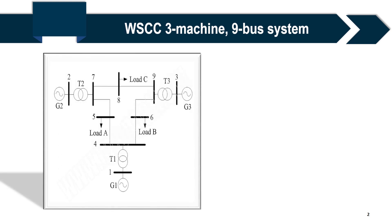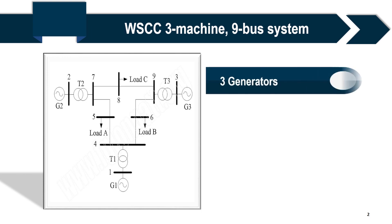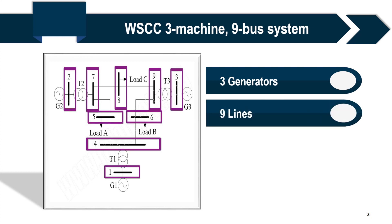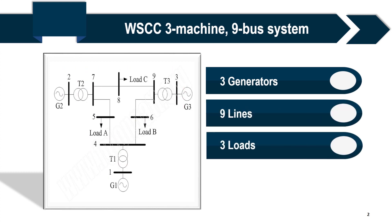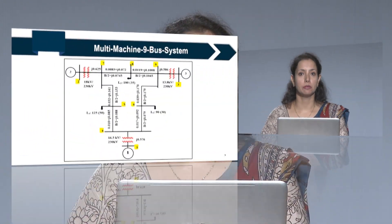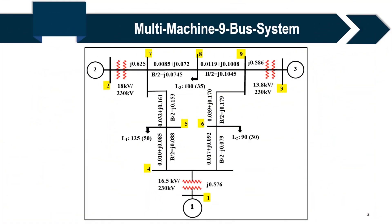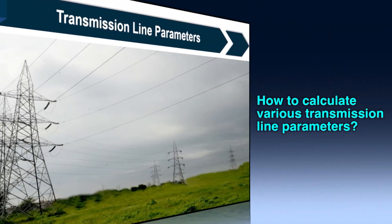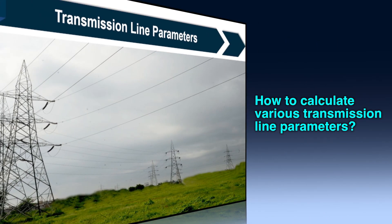This is the 3-Machine 9-Bus System which we are going to study. As you can see, it has 3 generators: generator 1, generator 2, and generator 3. There are a total of 9 transmission lines, 3 loads — load A, load B, and load C — and 3 power transformers. Before working on this system, we must know how to calculate the various transmission line parameters.